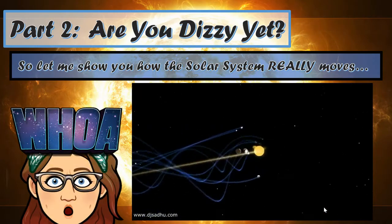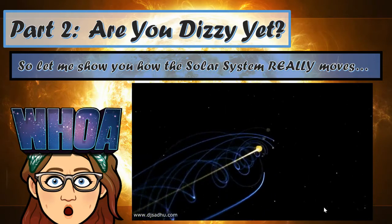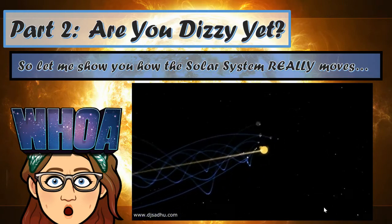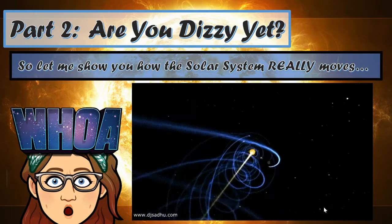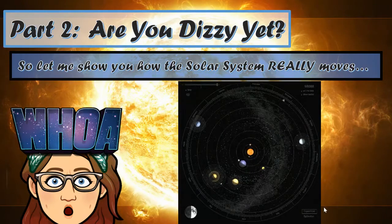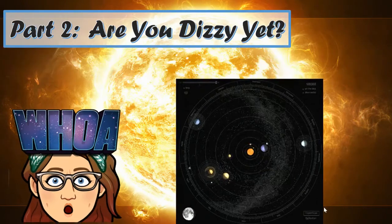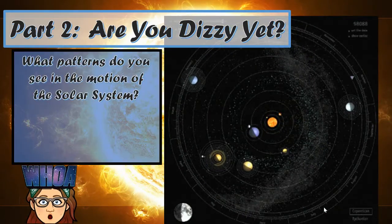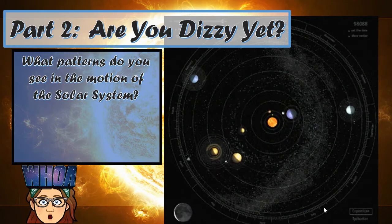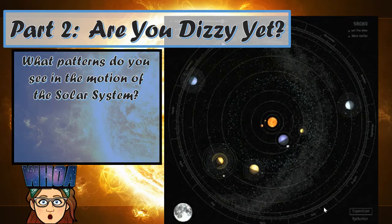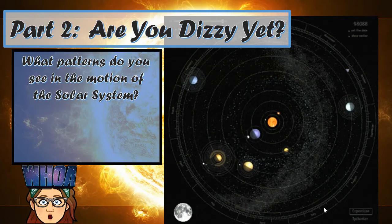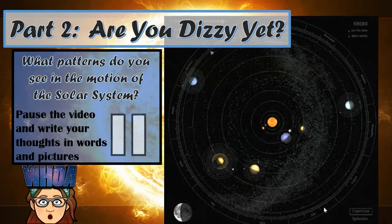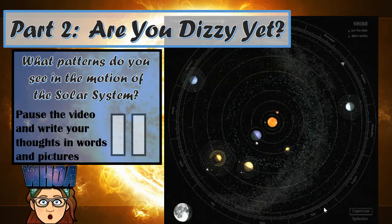So are you dizzy yet? In terms of what we're going to be discussing in this class, that last GIF is far too complicated — fascinating, but far too complicated. So we are going to focus on this simpler one instead. What patterns do you see in the motion of the solar system looking at this GIF? Please pause the video and write your thoughts in words and pictures in your notebook.